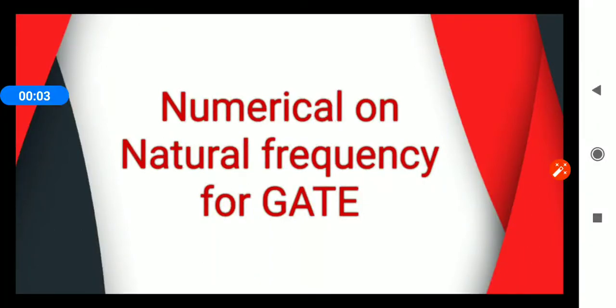What is vibration? We know that to and fro motion of any body about its mean equilibrium position is called vibration. In that definition, we had a sentence called 'unwanted to and fro motion,' because for mechanical engineers, vibrations are unwanted.